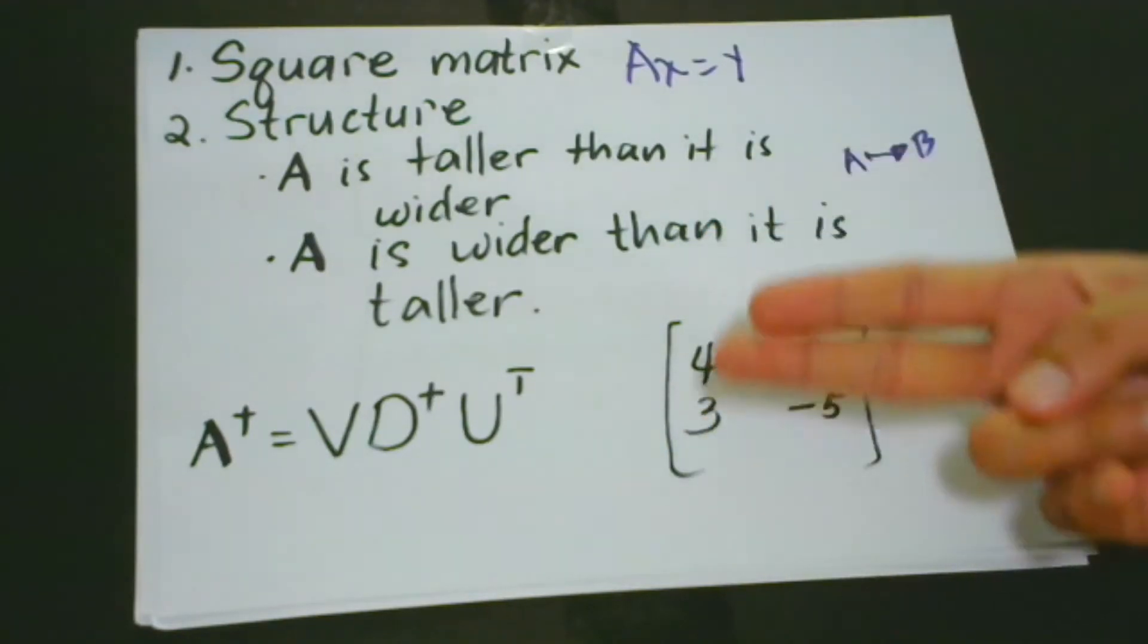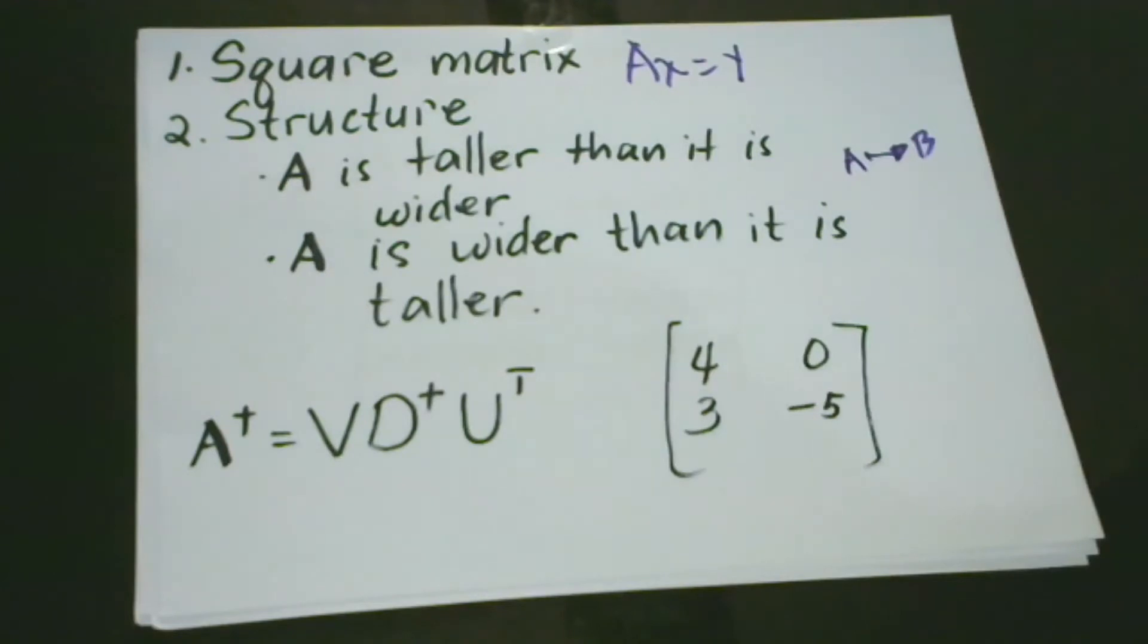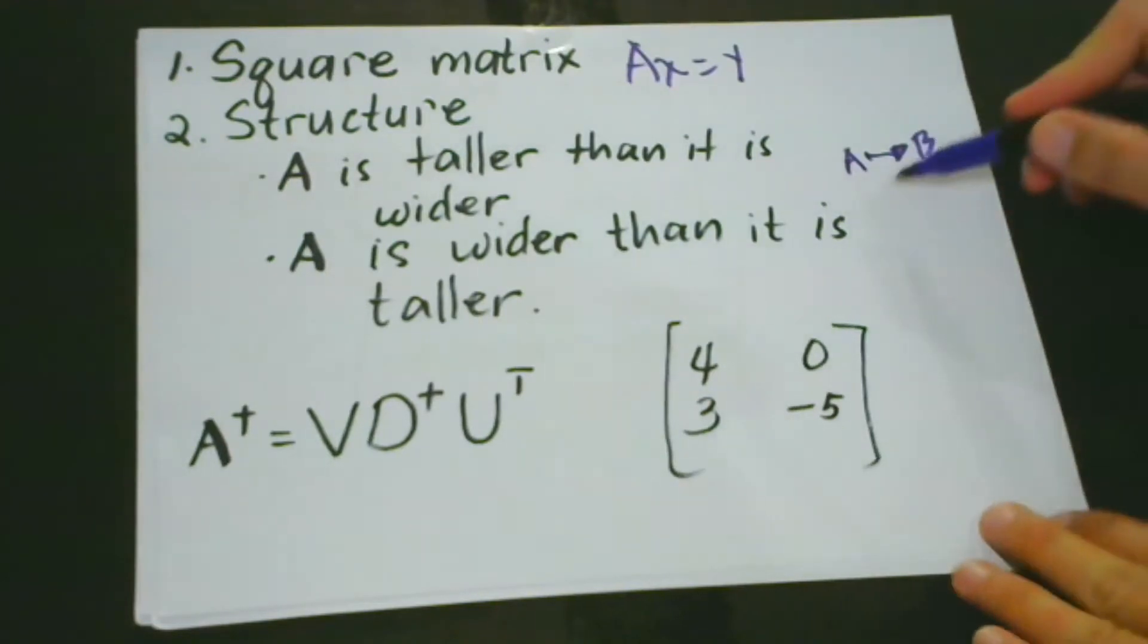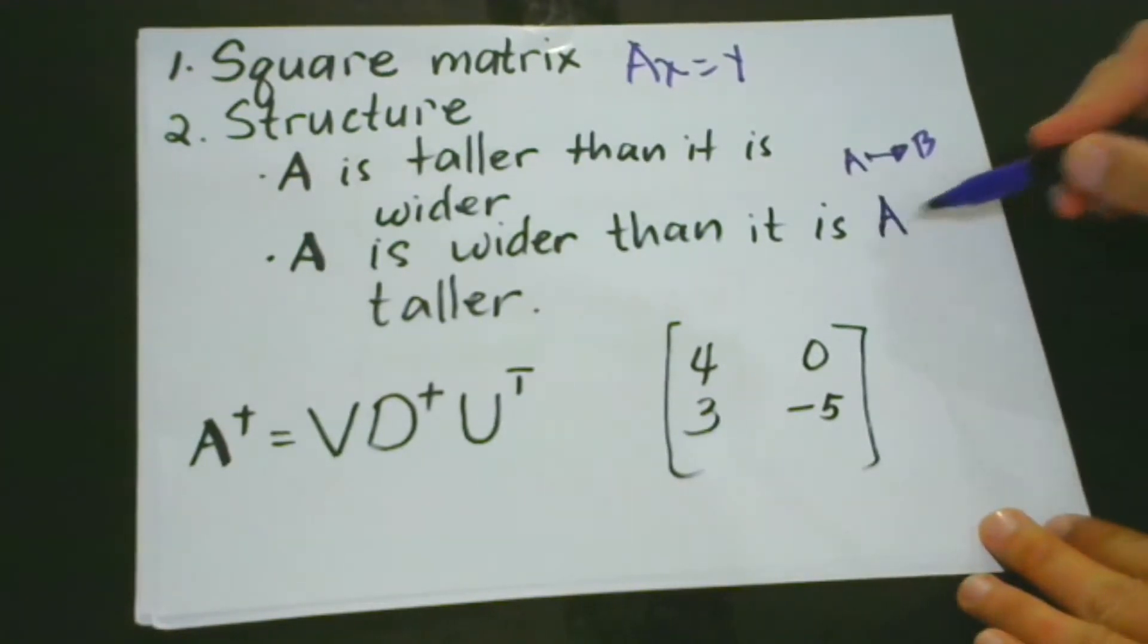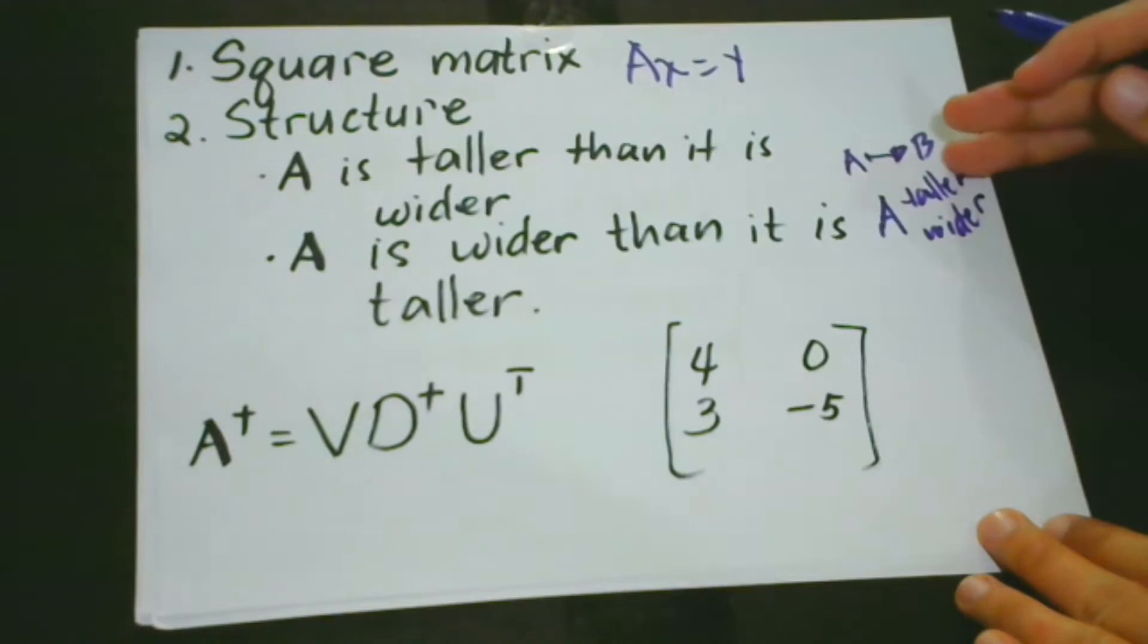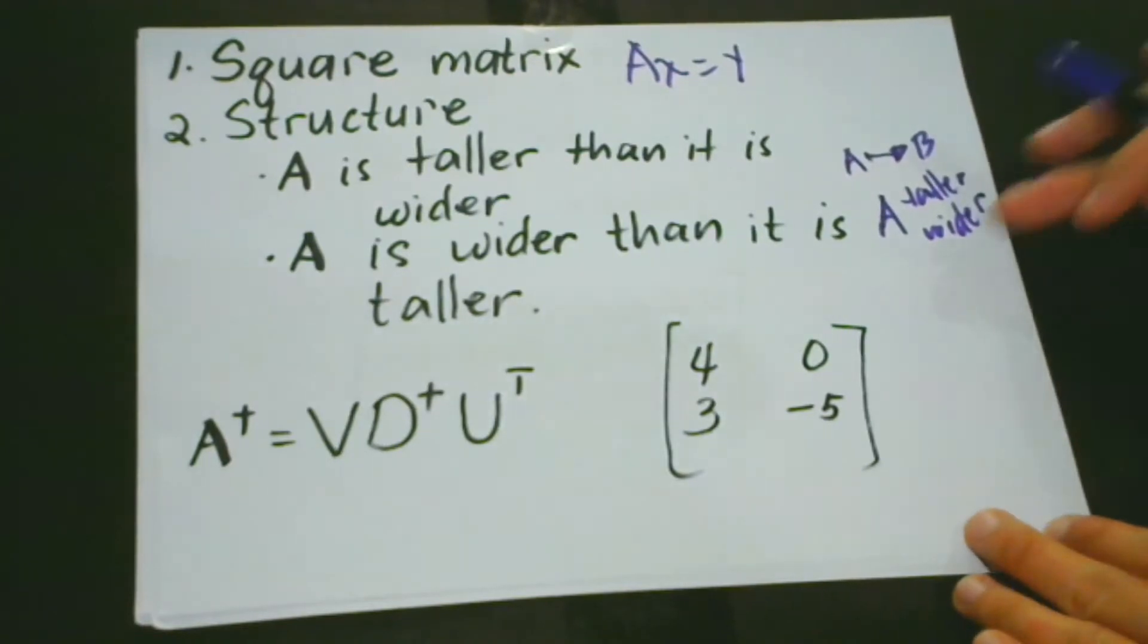The structure here that we mean is we have to consider two situations. The first situation is that A is taller than it is wider. It means it has more elements in column than in rows. So more columns, less rows. In this case, there is a possibility that there is no solution for the equation.